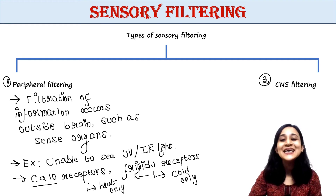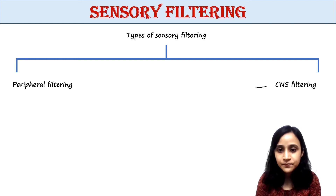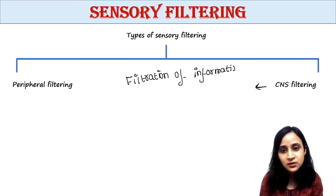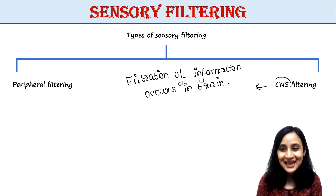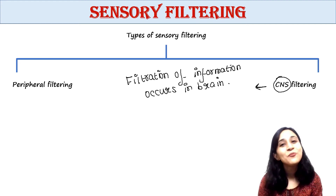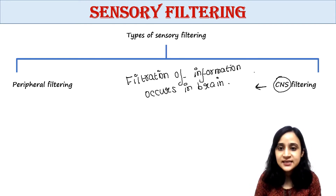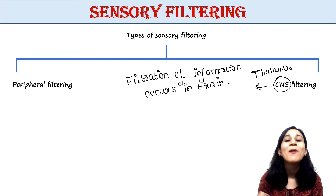Now let's talk about CNS filtering. In CNS filtering, filtration of information occurs in the brain — in the central nervous system. Particularly, the thalamus of the brain takes part in this filtration.